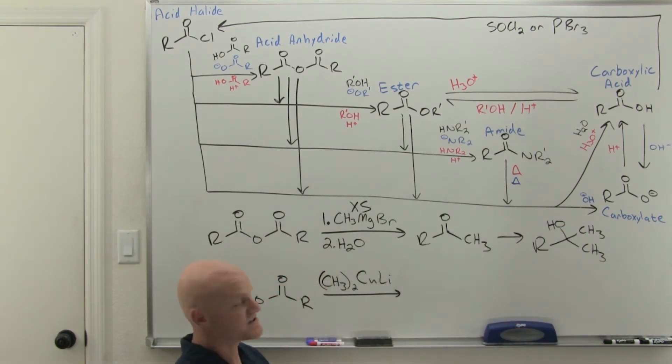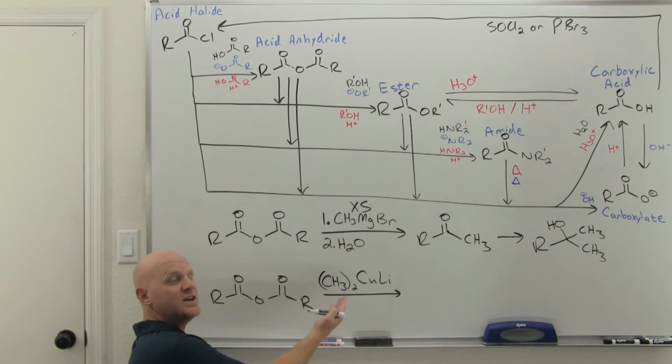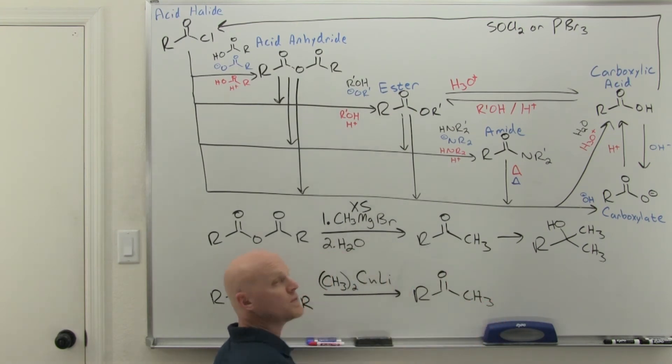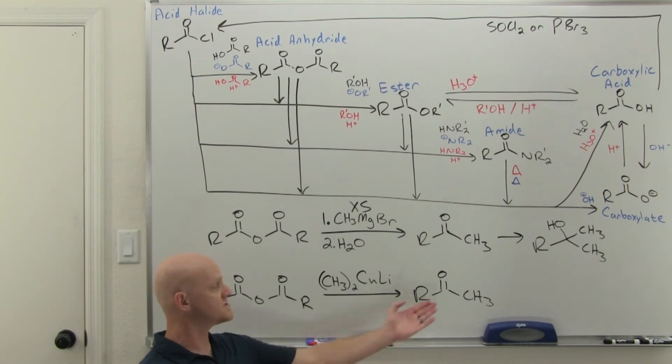If you want to stop at one equivalent, just like with the acyl halide, that's where you're going to use the Gilman reagent, this lithium dialkyl cuprate. The key is that the lithium dialkyl cuprate won't react with the subsequent ketone you produce, allowing it to be your final product.